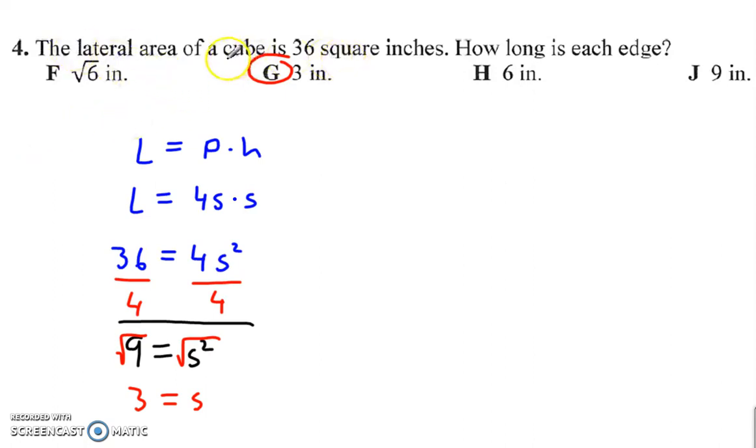Number four, the lateral area of a cube. Keyword here, cube. Lateral area, a cube is a type of rectangular prism where the lateral area is perimeter times the height. But in a cube, the perimeter is just four times the side and the height is also the side. So that's four times the side squared. Divide by four, you get nine as the side squared. Square root that and you get three.